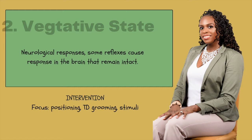Stage two is your vegetative state. There are some neurological responses that can be seen — some of these reflexes cause a response in the brain that remains intact. It's not so much that you are physically seeing it; it's more like they're being picked up on the monitors. Again, the intervention is going to continue to be positioning, totally dependent for grooming and everything else. You could try to add in a little stimuli at this point to support or improve that neurological response that's starting to fire up.